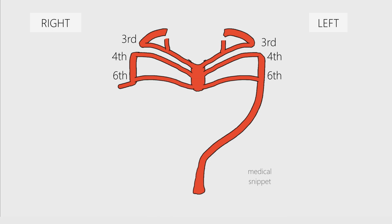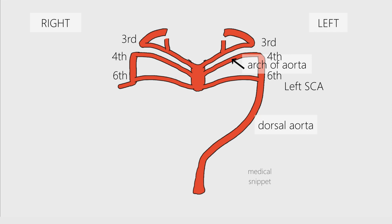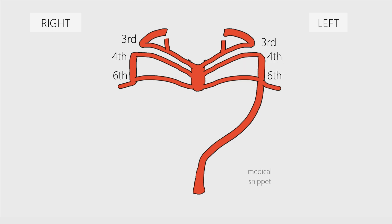The left fourth aortic arch, along with the left horn of the aortic sac, forms the arch of the aorta, which is continuous with the left dorsal aorta. The left subclavian artery arises from the left seventh intersegmental artery. The right horn of the aortic sac forms the brachiocephalic trunk.